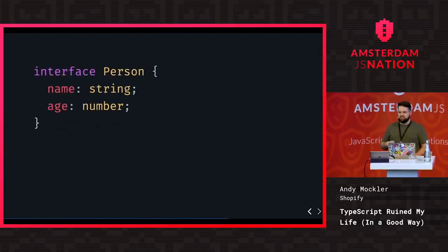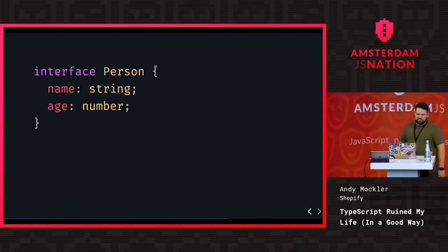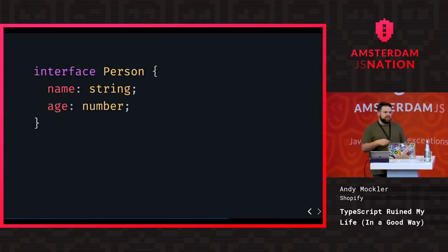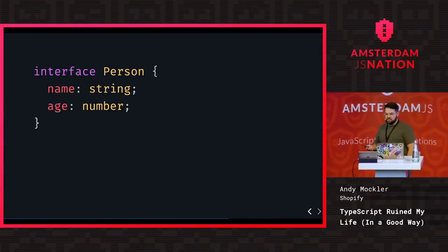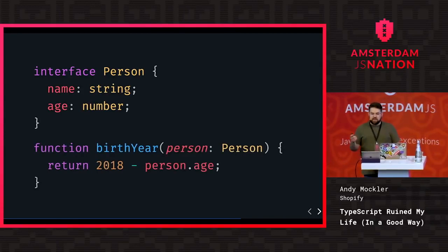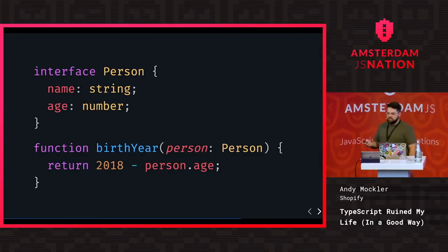An interface is sort of like a typed object — similar to plain JavaScript object syntax. We declare an interface called Person with properties name as a string and age as a number. When creating an object of this Person interface, I need to supply a name and an age. This is also really helpful for functions — I can pass these objects around, name the types, and TypeScript can infer things from it, like calculating a birth year and inferring the return will be a number.